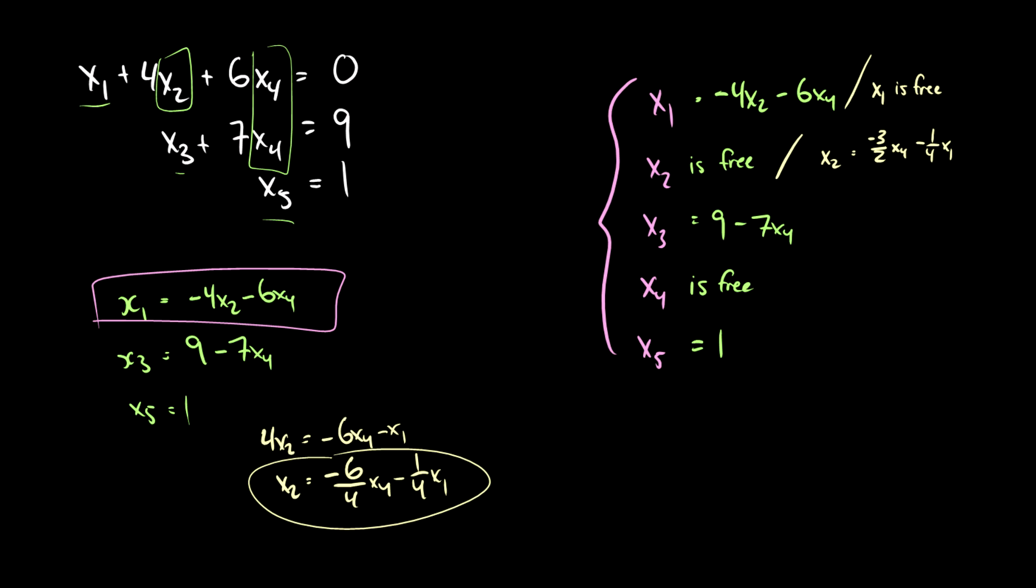But in the second case where we have x2 dependent on x4 and x1, the numbers can come out a little bit more confusing. They have the same solution sets.